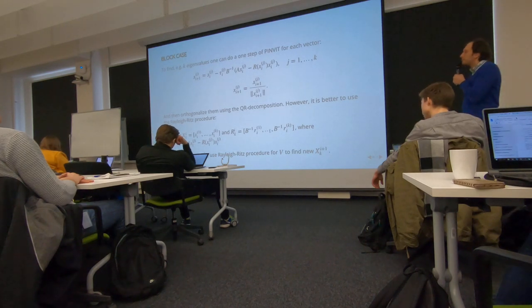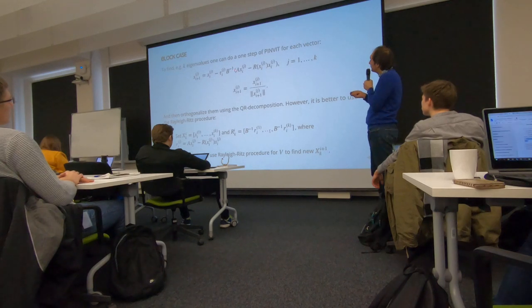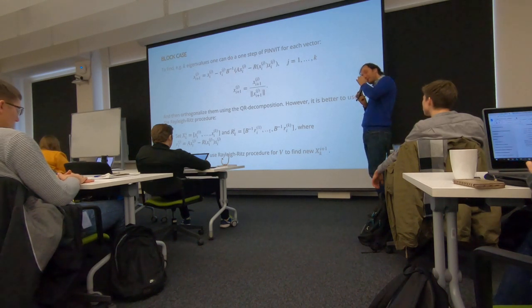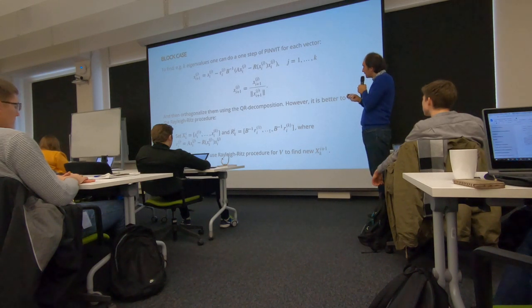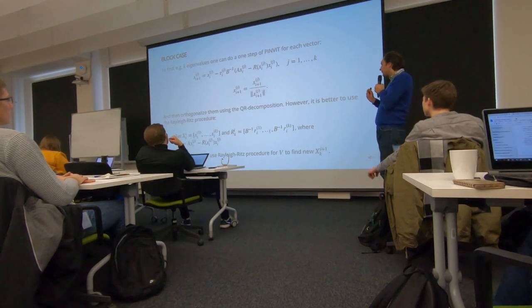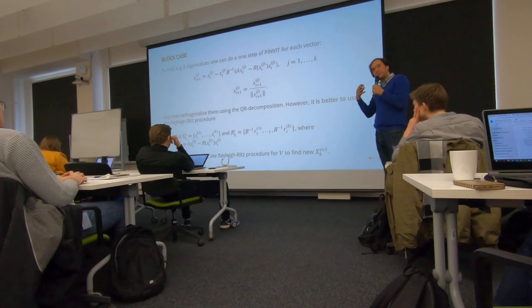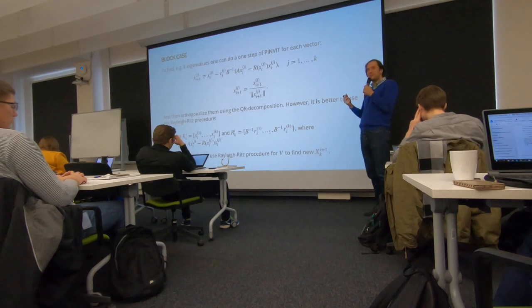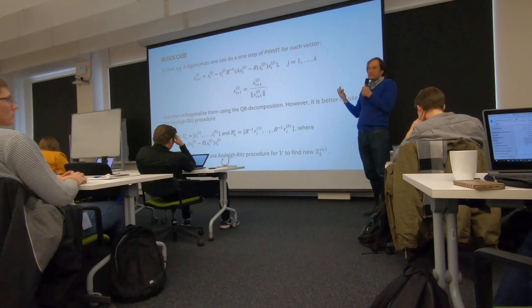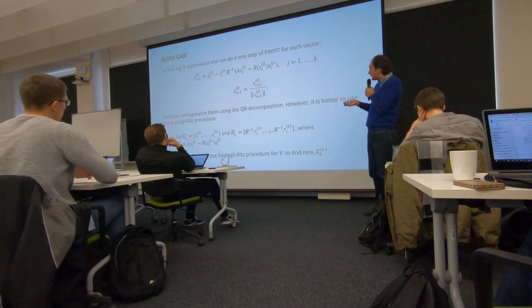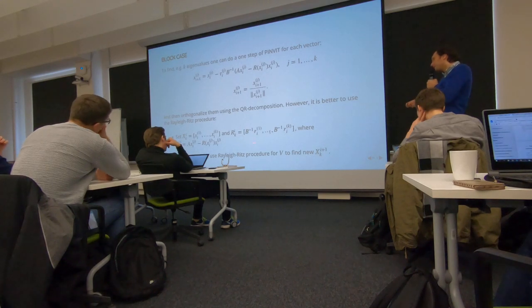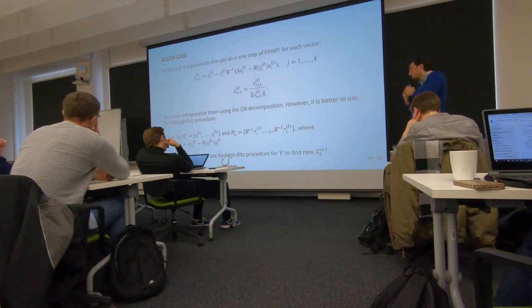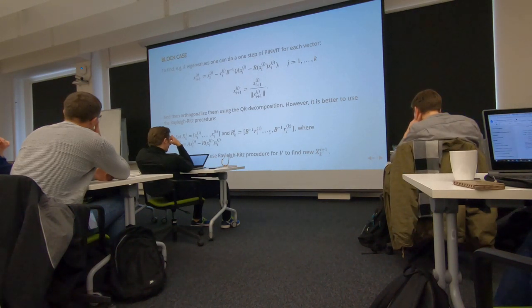Generalization to the block case of the preconditioned inverse iteration is absolutely the same. What you do? You iterate many vectors. This is like simultaneous, many starting points, and you update them. If you do not do anything between those points, they will collapse into one point. So what you do? You orthogonalize them. But it is better to use Rayleigh procedure to find minimum of the Rayleigh quotient over the linear subspace. What's the whole idea of Rayleigh-Ritz? If you want to find one eigenvalue, it is just minimization of the Rayleigh quotient over the linear subspace. If you need more eigenvectors, this is the problem. You have these iterates organized into n times k matrix. You have also k residuals. And then, we can put them into a block matrix. We have a subspace which is spanned by 2k vectors.